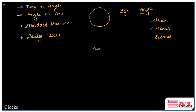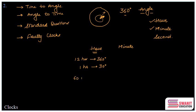Let me draw a simple table for these two needles and their speeds. The hour hand is the smaller, thicker needle. The time taken by the hour hand to complete one full circle is 12 hours. That means in 12 hours it covers 360 degrees, so in one hour it covers 30 degrees. Since one hour equals 60 minutes, in one minute the hour hand covers 30 divided by 60, which equals half a degree. So every minute, the hour hand covers 0.5 degrees.